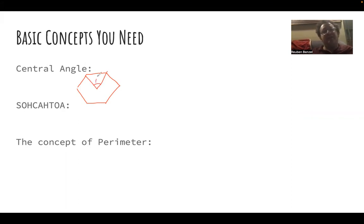There's this concept called a central angle. So to find the central angle, what we do is we take 360 degrees and we divide by the number of sides. So I just write this as 360 over n, where n is the number of sides.